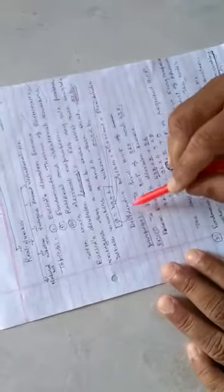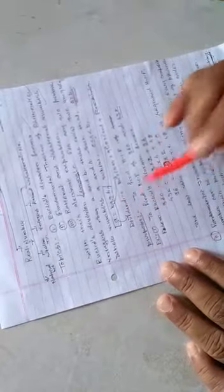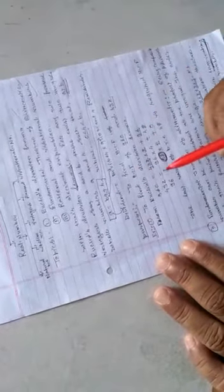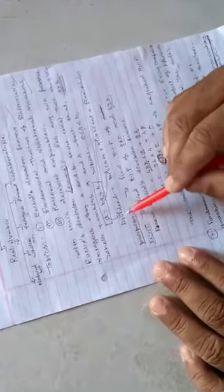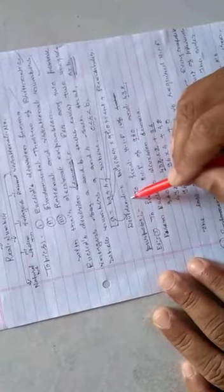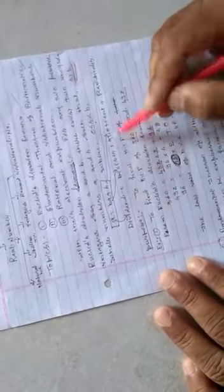Now, to make this thing a little more easier, children, it is not a new thing. It is the division algorithm only. As you know from the division algorithm, dividend equals divisor into quotient plus remainder.